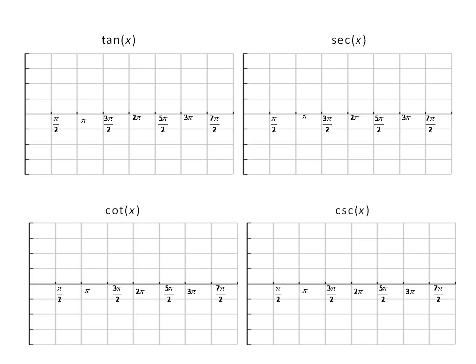So first of all, let's look at tangent and secant. And I'll just label the asymptotes. Now, remember the asymptotes for tangent because the denominator of tangent is cosine, and the denominator for secant is also cosine.